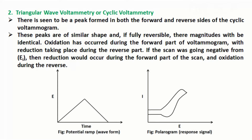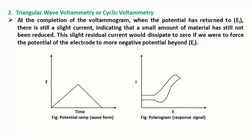Oxidation occurs during the forward part of the voltammogram, with reduction taking place during the reverse part. If the scan was going negative from initial potential EI, then reduction would occur during the forward part of the scan, and oxidation during the reverse. At the completion of the voltammogram, when the potential has returned to initial potential EI, there is still a slight residual current, indicating that a small amount of material has not yet been reduced. This residual current would dissipate to zero if the potential were forced to more negative values beyond EI.